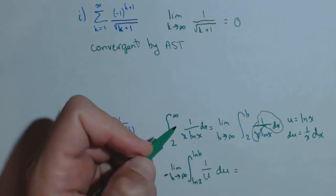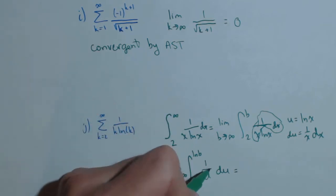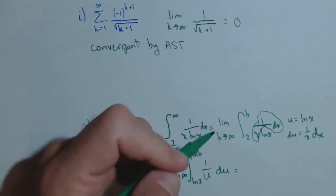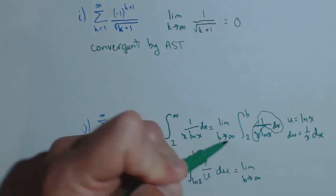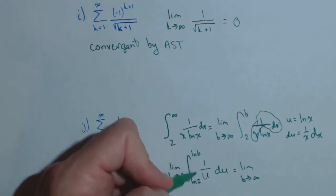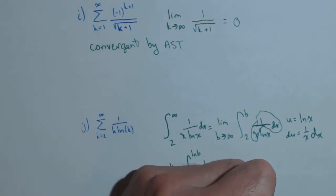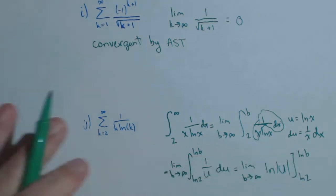Now, the antiderivative of 1 over u is ln of u, ln of the absolute value of u, so we have the limit as b goes to infinity of, everything's going to be positive, so we don't need to worry about the absolute value, but if you want it in there, it's not going to hurt it, from ln of 2 to ln of b.